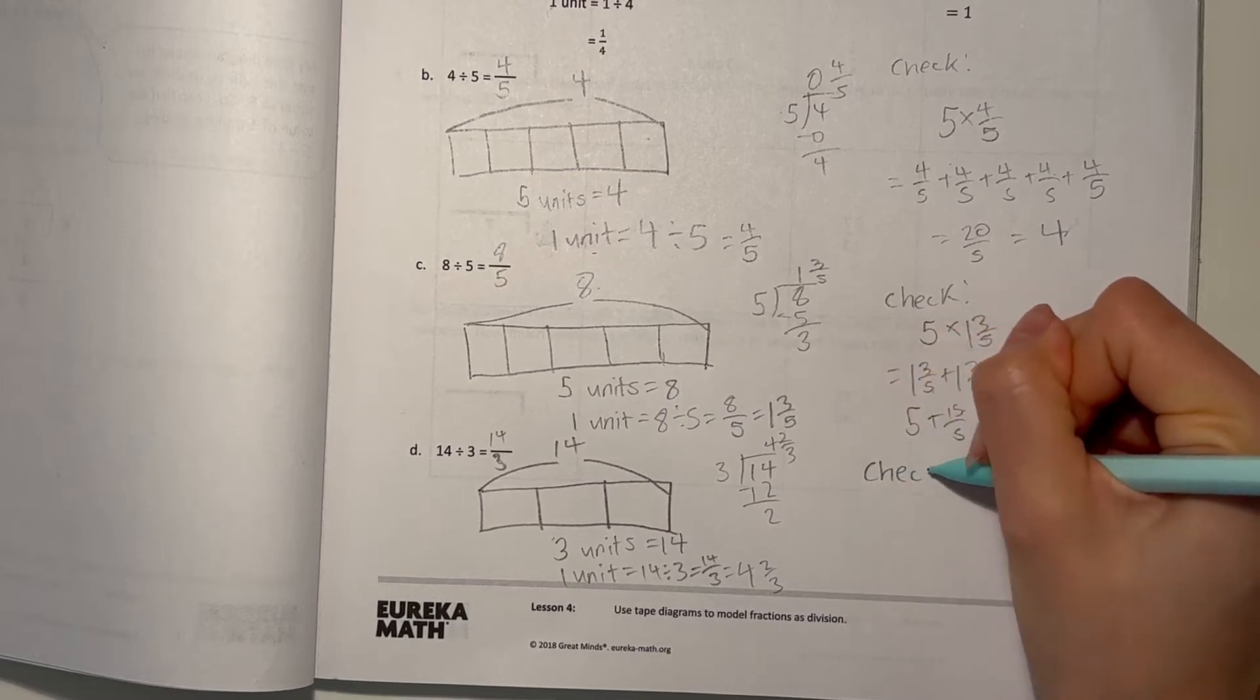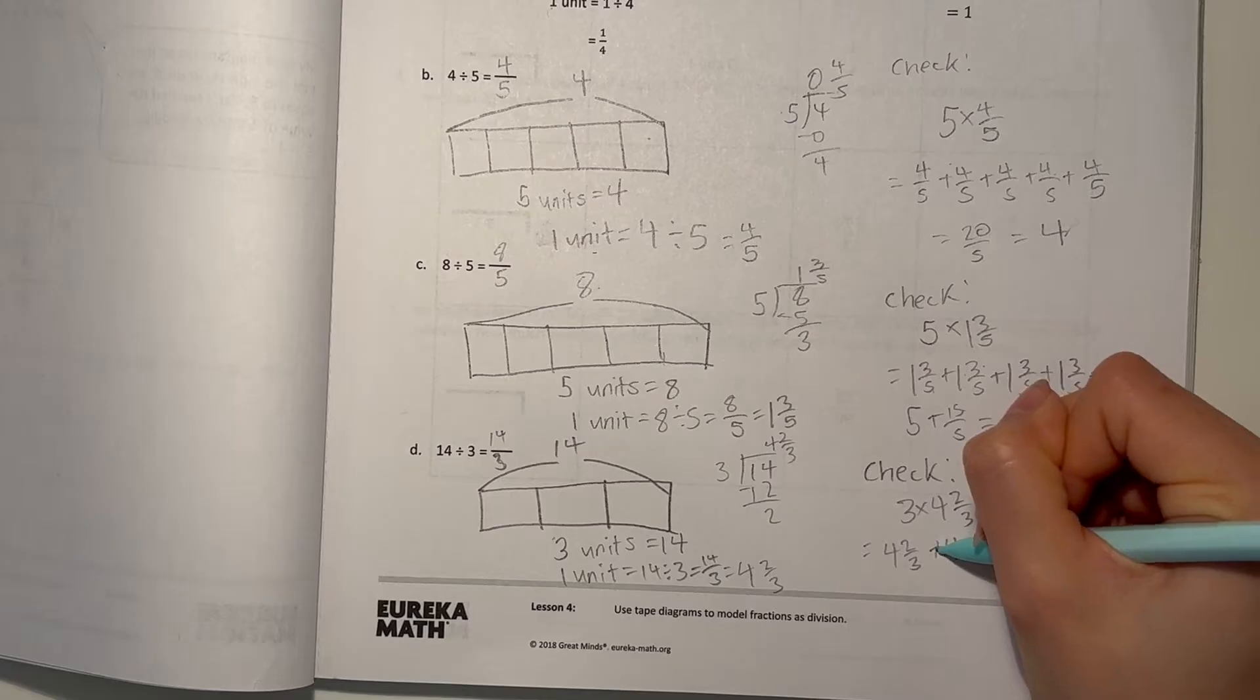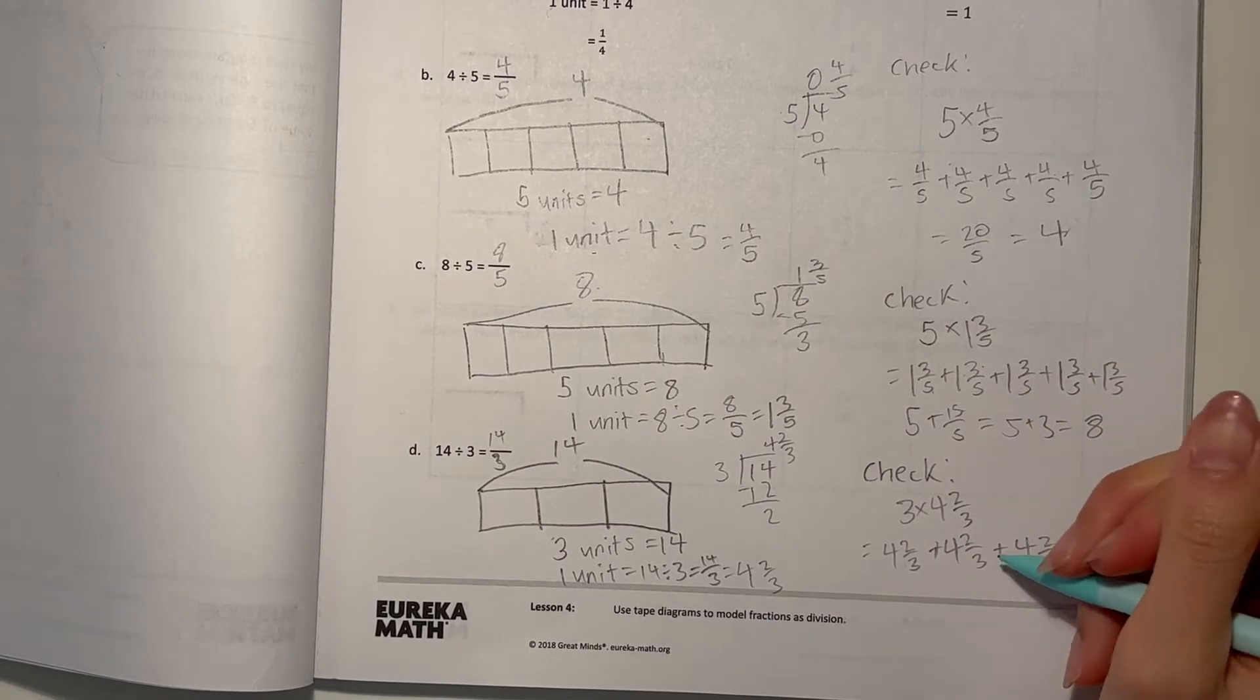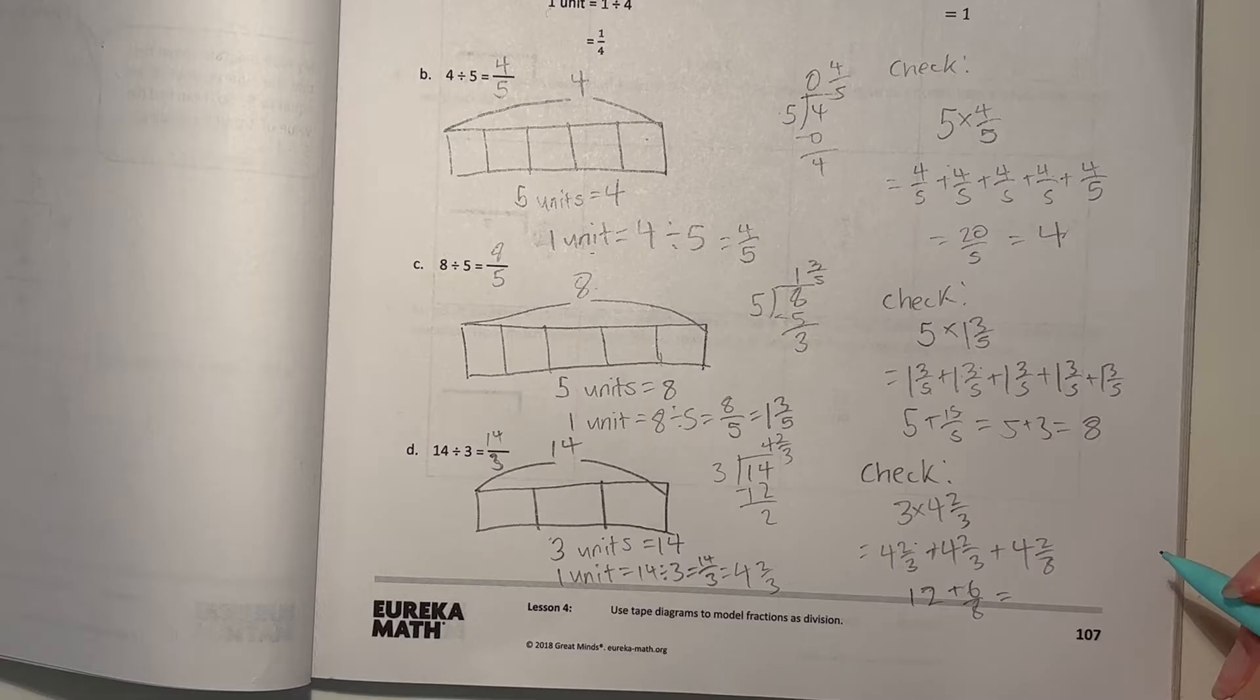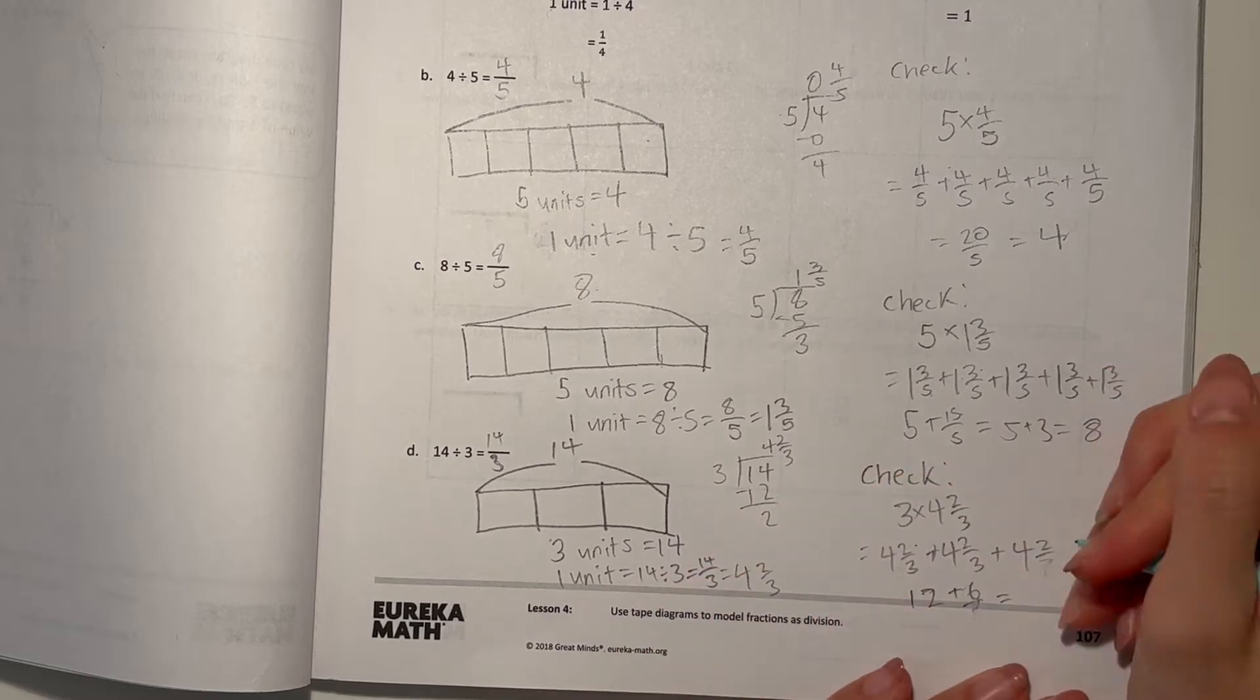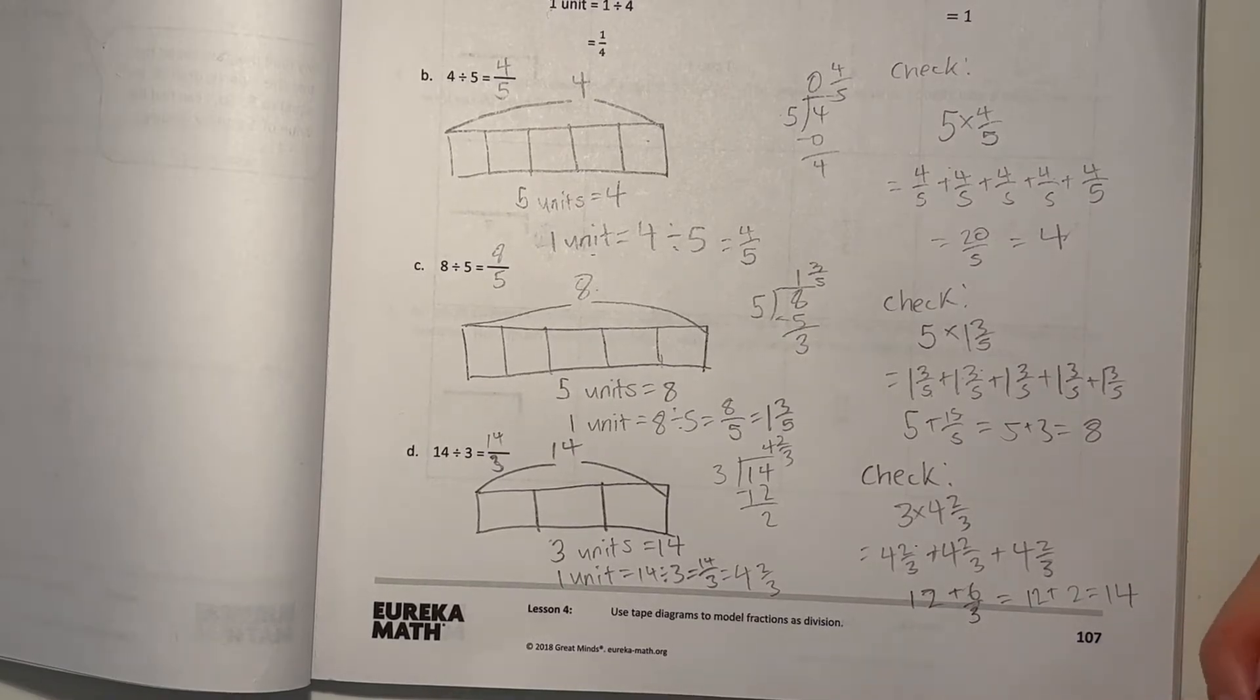So for the check part, we just do 3 times 4 and 2 thirds. That's 4 and 2 thirds, plus 4 and 2 thirds. 4 plus 4 plus 4, that's 12 plus 2, 4, 6 thirds, which is 12 plus 2, which is 14.